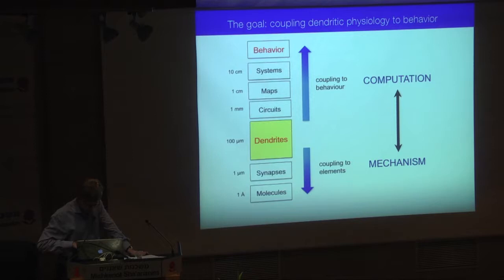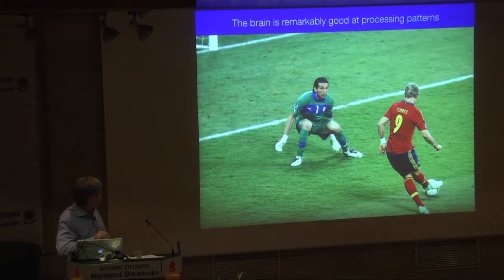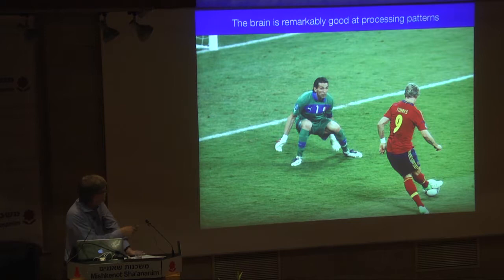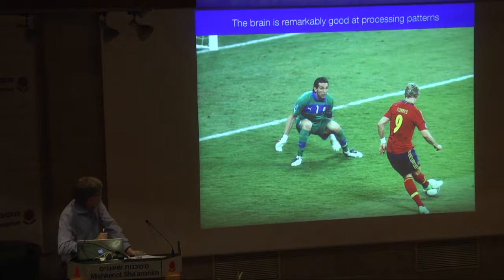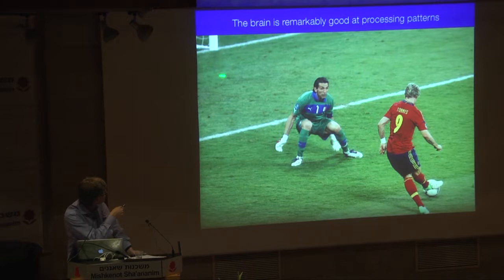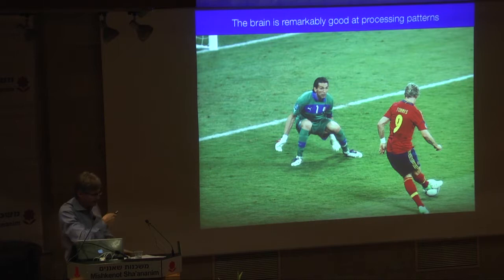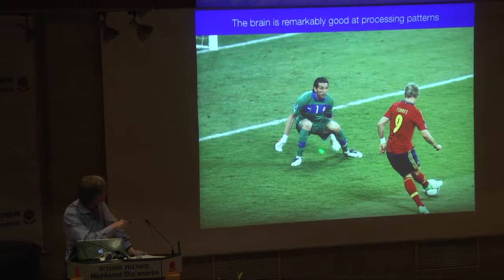Here's an example of a real-world computation — one that some of you may be familiar with — from the Euro 2012 final. This represents a computational duel between Spanish striker Torres and Italian keeper Gigi Buffon. The striker needs to keep track of the keeper's position with respect to the goal, discriminate it from a complicated background, and launch the ball toward the goal while missing the keeper.